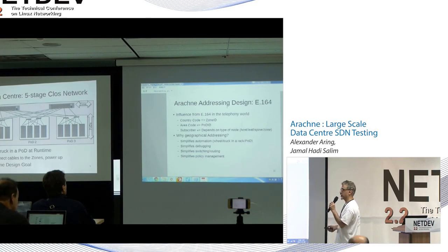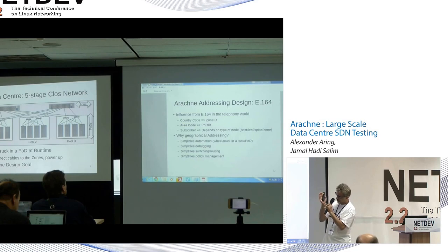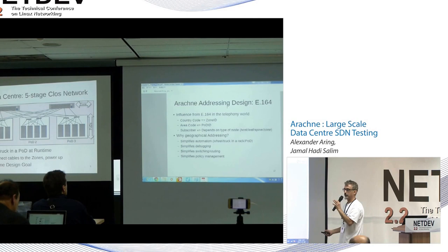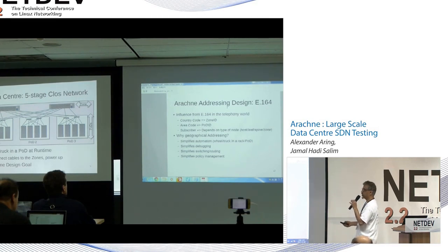Geographical addressing simplifies debugging. If I'm running tcpdump and I look at the IP address, I can tell you exactly where a specific IP address is coming from — go walk down this hallway, turn left, rack number three, pod number five. It also simplifies switching or routing, and very much simplifies policy management. We add three or four TC rules and we're set for isolation.